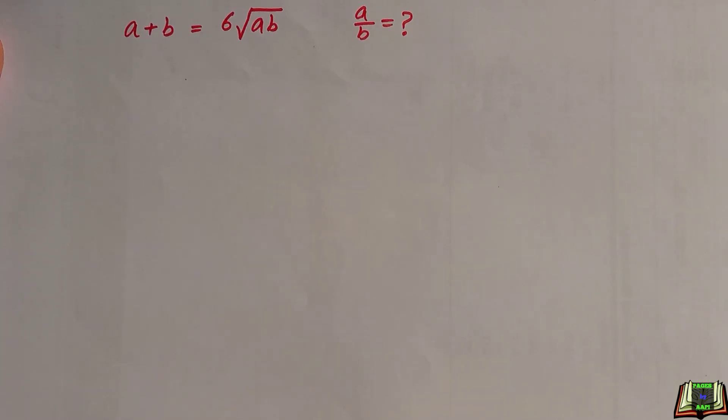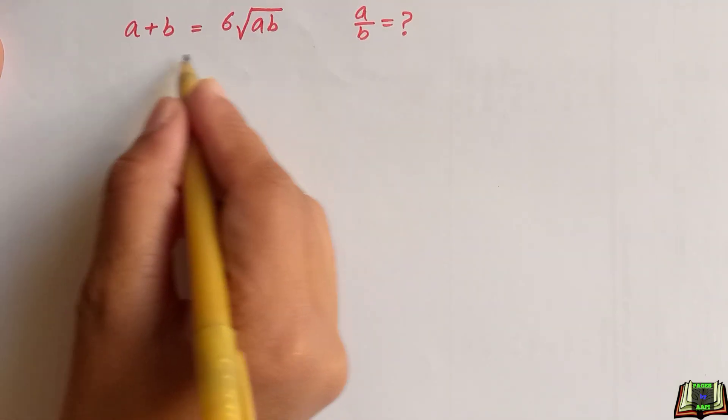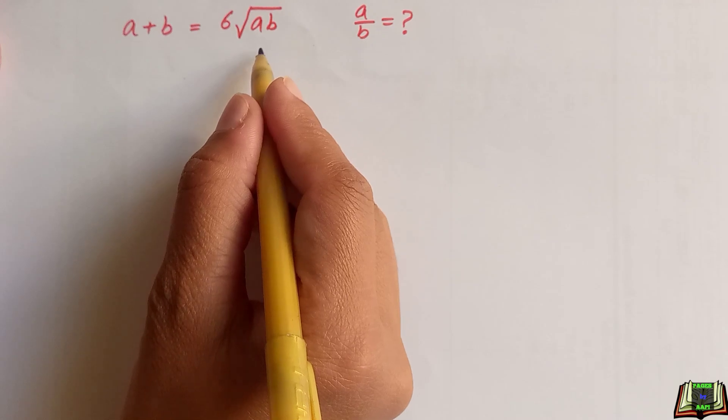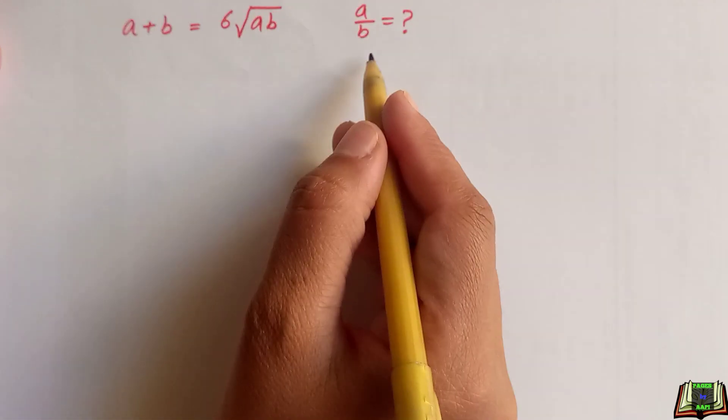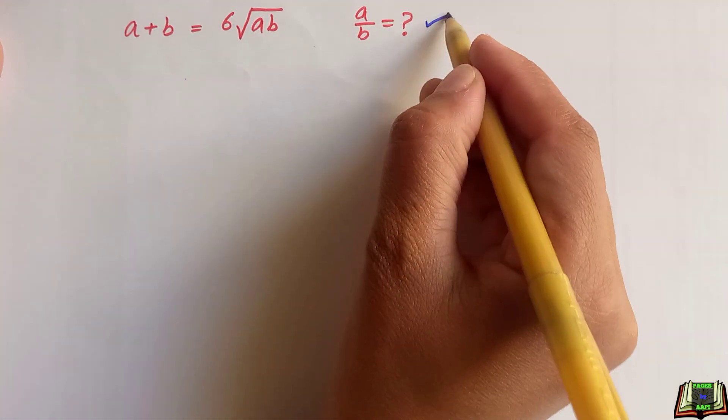Welcome all of you. Let's solve this nice algebra question. If a plus b is equal to 6 root ab, then we are supposed to find the value of a over b.